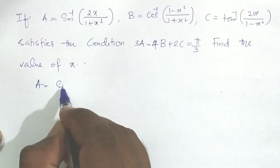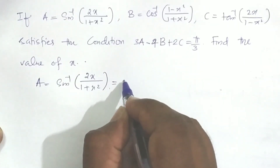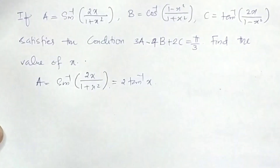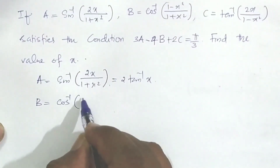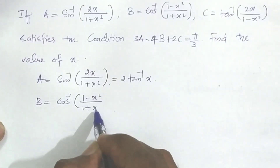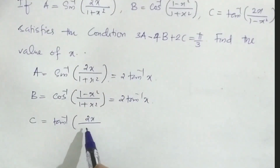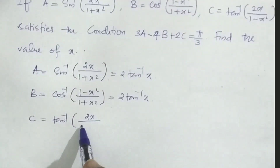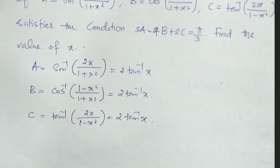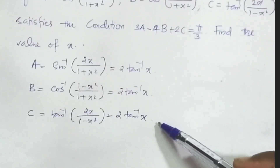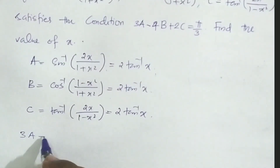We recognize that a equals sin inverse(2x/(1 plus x squared)) equals 2 tan inverse x, similarly b equals cos inverse((1 minus x squared)/(1 plus x squared)) equals 2 tan inverse x, and c equals tan inverse(2x/(1 minus x squared)) equals 2 tan inverse x.